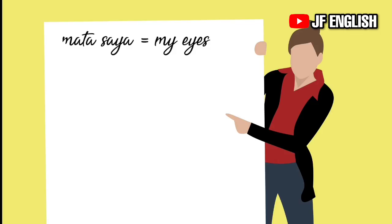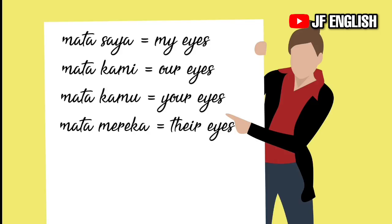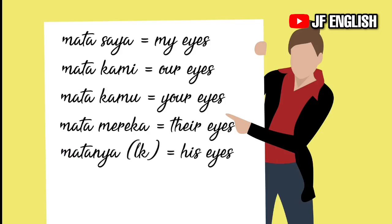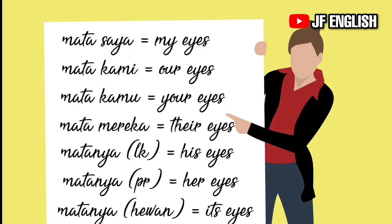Contoh: 'my eyes' — kata 'my' merupakan possessive adjective, sedangkan 'eyes' adalah bendanya. Ketika menggunakan possessive adjective, kamu harus menyebutkan bendanya di belakang. Contoh lainnya: our eyes (mata kami), your eyes (mata kamu), their eyes (mata mereka), his eyes (matanya — laki-laki), her eyes (matanya — perempuan), its eyes (matanya — untuk hewan). Sudah paham?